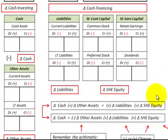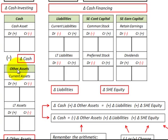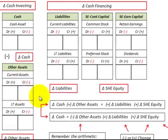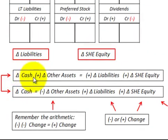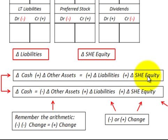What we're going to look at is an equation. I've broken out the cash or assets account into a cash account and then all other assets, subtracting all those other assets out from the cash account. The equation is: the change in cash plus the change in other assets equals the change in liabilities plus the change in stockholders' equity.